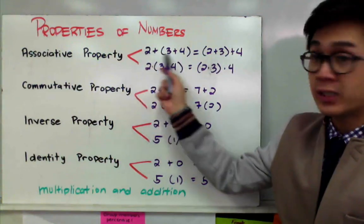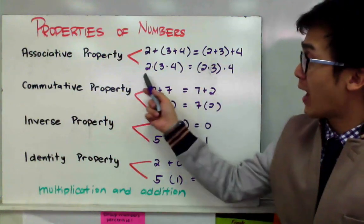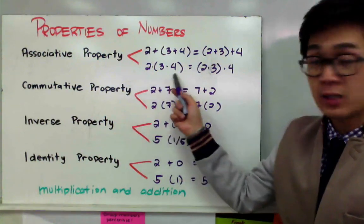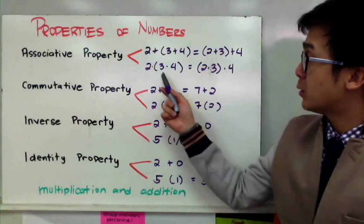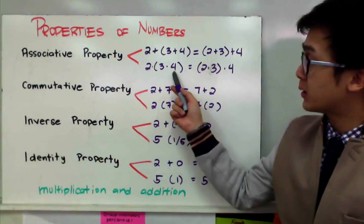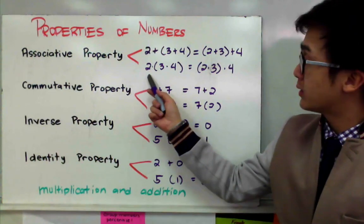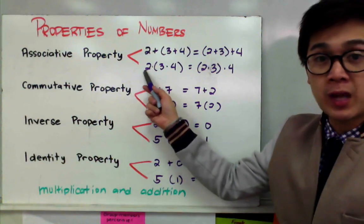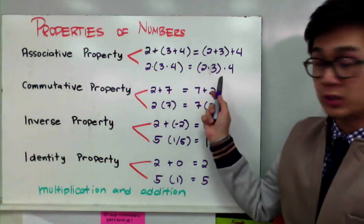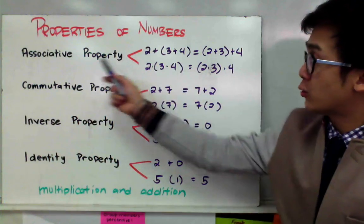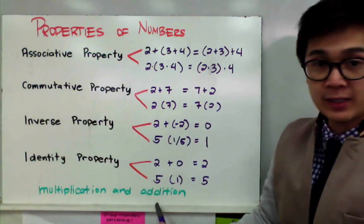Now if it's true for addition, it's also true for multiplication. So if I have three numbers that I need to multiply — if I multiply three and four and then multiply it to two, the answer will still be the same if I multiply two and three and then four afterwards. So the associative property is true for both multiplication and addition.